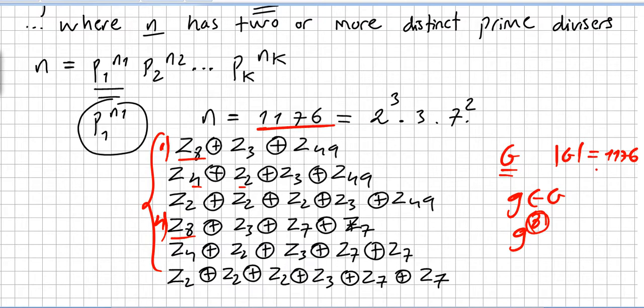Which one of these could G be isomorphic to? This one and this one, right? The first, this one and the fourth, right? These are the only ones who have elements of order 8. So if G has this order 1176 and has an element of order 8, it cannot be isomorphic to this one, for instance. No element of order 8 here.